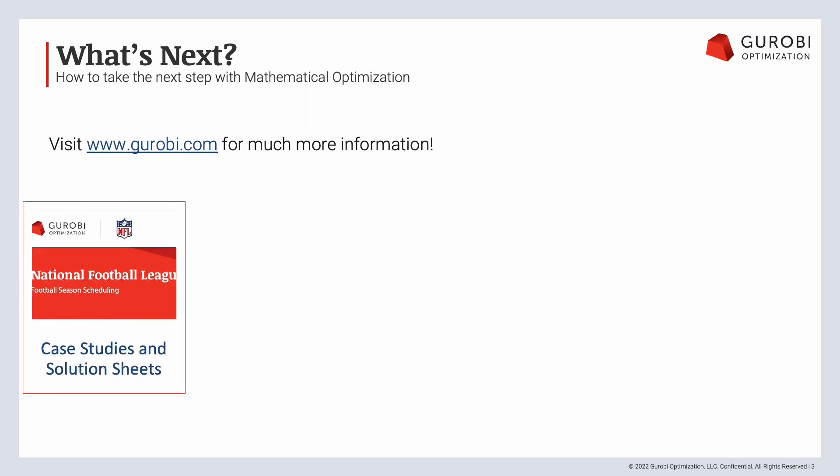One is our set of case studies and solution sheets. Our case studies are customer stories that show how people use Gurobi and what industries they're in — real problems that people are using Gurobi to solve. Our solution sheets are a little broader; they talk about how Gurobi and mathematical optimization can be used in, for example, the financial sector.